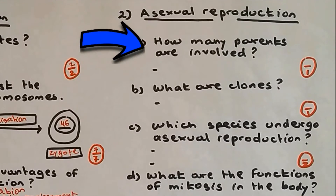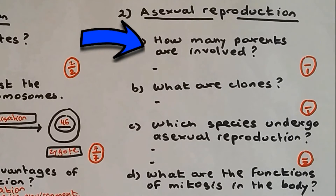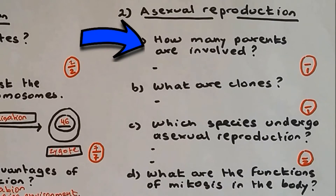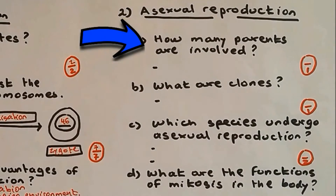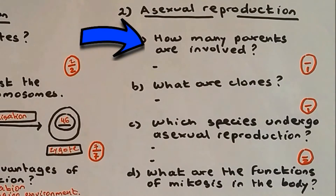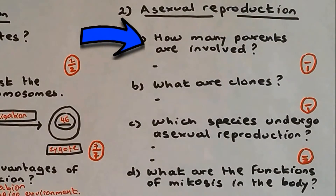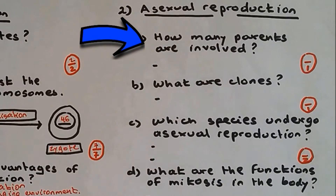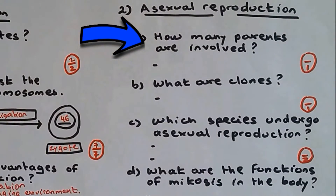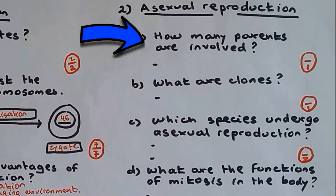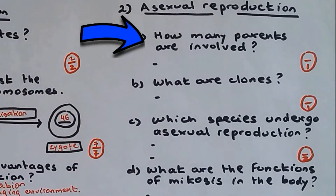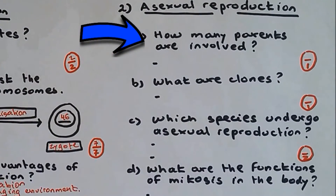Question number two is all about asexual reproduction. How many parents are involved in asexual reproduction? In asexual reproduction, only one parent is involved.